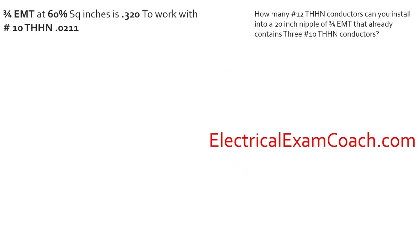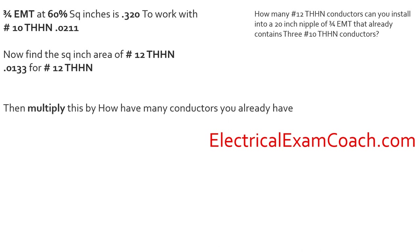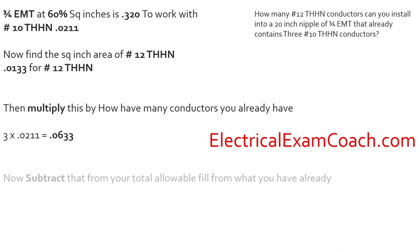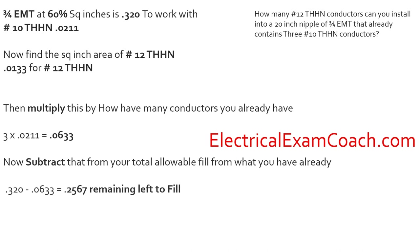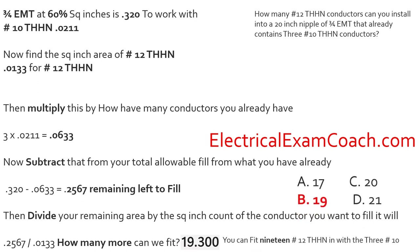With the pipe area and conductor values in hand, we also write down the number 12 area from Table 5. Multiply: 3 × 0.0211 = 0.0633. Subtract from 0.320: remaining left to fill. Then divide remaining by the number 12 area and we find we can fit 19.3. We round down again since it's below 0.8, and we select answer B.